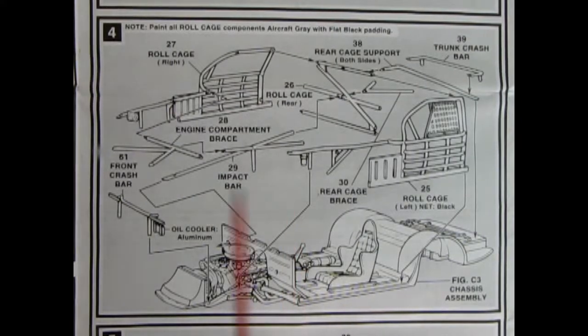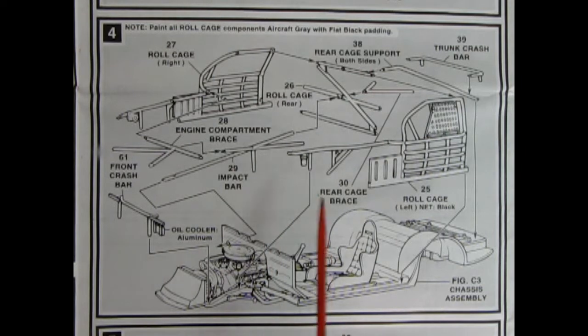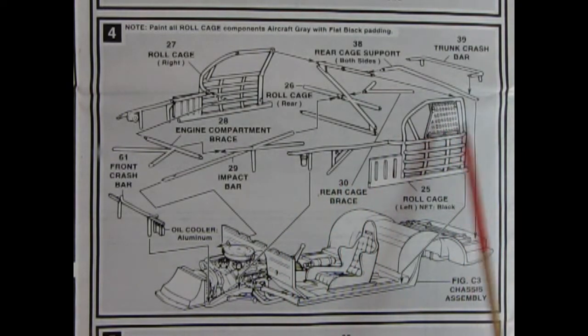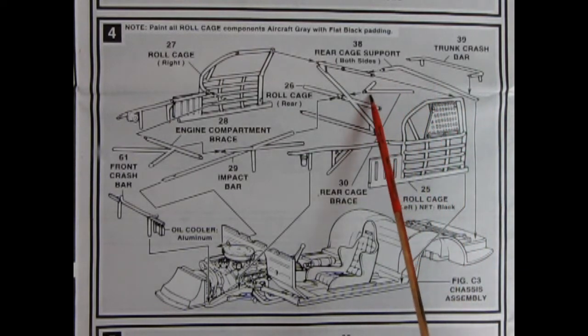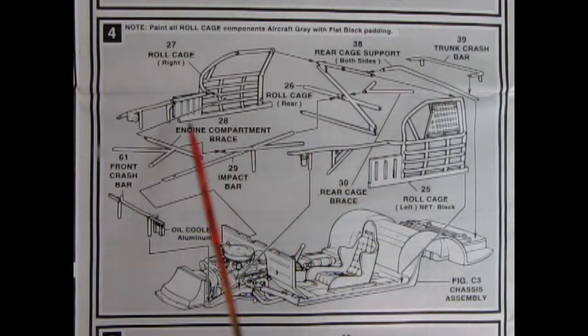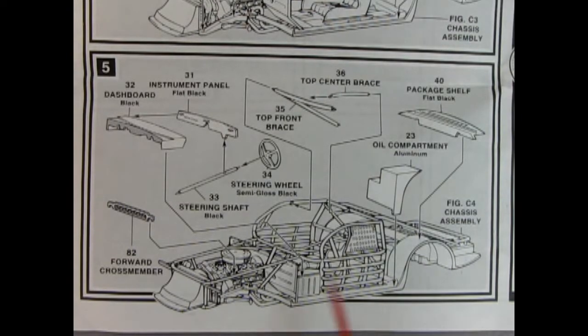In panel four we see our roll cage going together. There are so many bars in here it'll keep a good dog inside, keep them from falling out. We also have our racers net on the one side, trunk crash bar, rear cage support, and then a little brace up here, center brace, the left and right hand side, the braces over the engine, and up in front. Again a lot of braces. Now here we add in our oil compartment and our package shelf, top center brace, and the top front brace. Our steering wheel goes on our steering column which all hooks up into our two-piece dashboard and instrument panel. And then there's the forward crossmember. This is really very much like the Pontiac NASCAR we reviewed a long time ago.